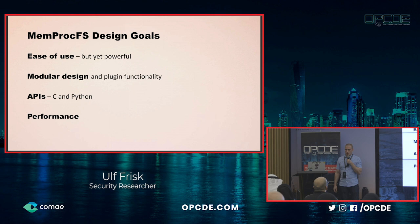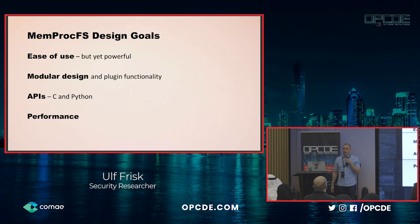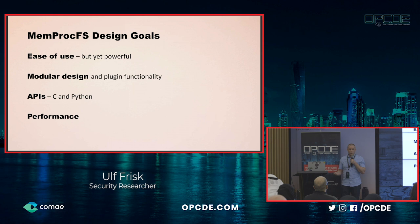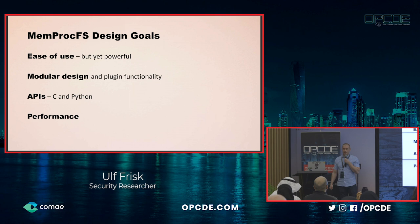When I was creating it, I wanted something really easy for users to use but yet very powerful. I wanted something modular in design with plugin functionality. A C API was given since it's coded in C, and I also wanted a Python API since Python is really popular within the security and memory forensics communities. Performance is super important when clicking around in a file system — you can't wait one or two minutes for a directory to render; it needs to be pretty much instant.